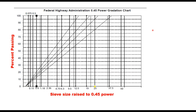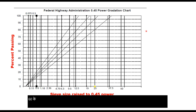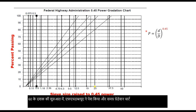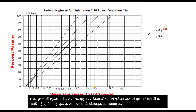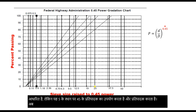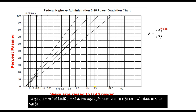In the early 1960s, FHWA introduced an aggregate gradation chart which is based on the Fuller gradation but uses an exponent of 0.45 in place of 0.5. These equations are found very convenient to determine the maximum density line and for adjusting aggregate gradation.